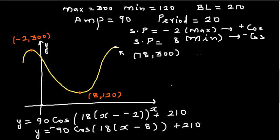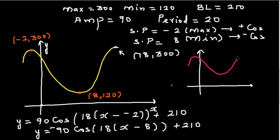For those interested, here's a practice problem. I'm making up a graph with maximum at (5, 10) and minimum at (−3, 50). Try to write the equation of this trig graph using the method we've covered.